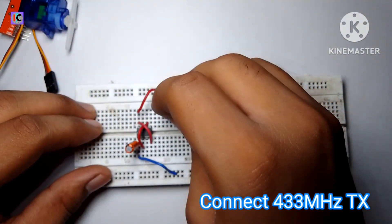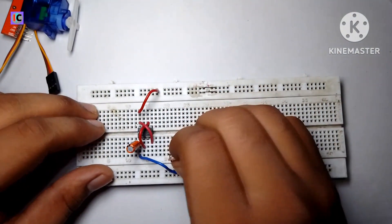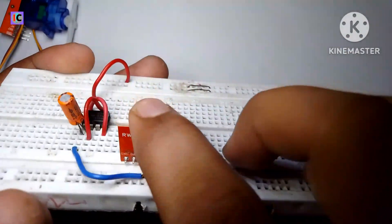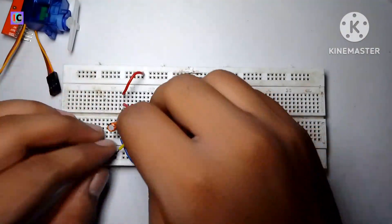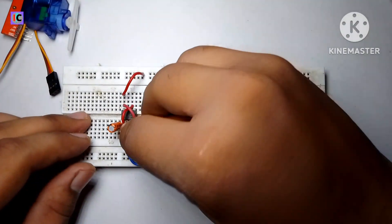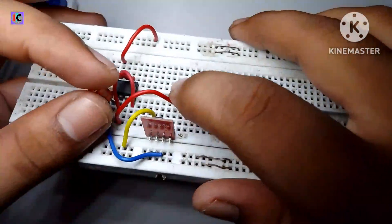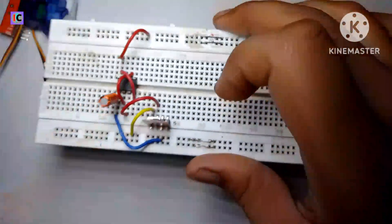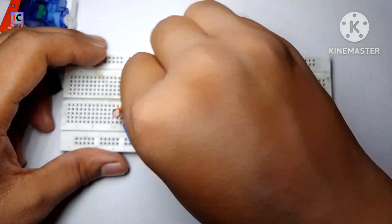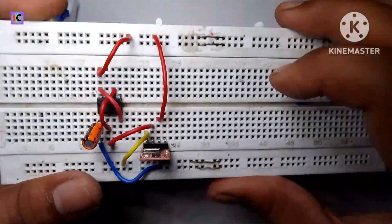You can see the transmitter module and the circuit. Now the power supply is connected to the module, that is negative and the 5 volt supply. Pin number three of the LM555 IC is connected to the data input pin of the transmitter module.